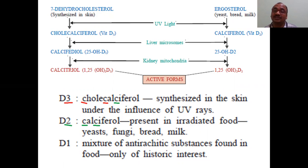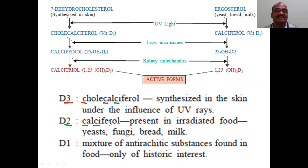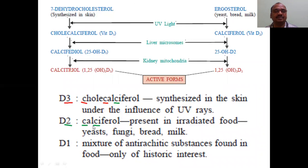Which vitamin D form is found in food? D1 as well as D2 — these two are found in food. D1 is of only historic interest. For D2, how to remember calciferol — there are two C's in the name, that is why it is D2. For cholecalciferol — three C's are there. Like that you can remember very easily — a wonderful trick.